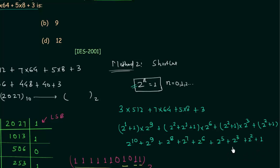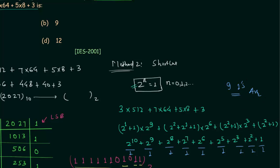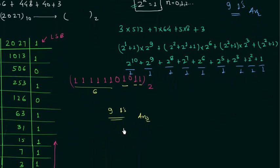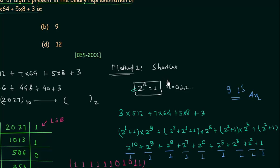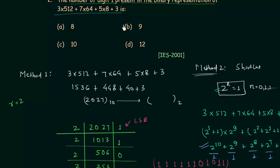Since we consider 2 raised to power n equals 1 for any n, each term counts as one '1'. Counting them: 2^10, 2^9, 2^8, 2^7, 2^6, 2^5, 2^3, 2^2, and 1 — that gives us a total of 9 ones. This matches the result from method 1. Option B is the correct answer for problem number 2.